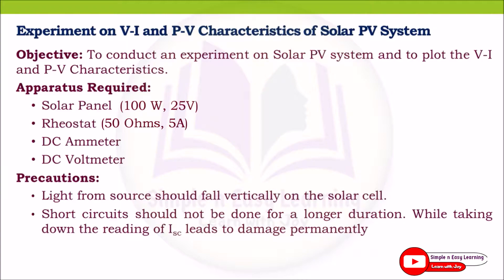Precautions: light from the source should fall vertically on the solar panel. We need to fix the solar panel in a correct direction so that sunlight falls vertically on the solar cell. Second, short circuit should not be done for long duration while taking the short circuit current reading, as it can lead to permanent damage.